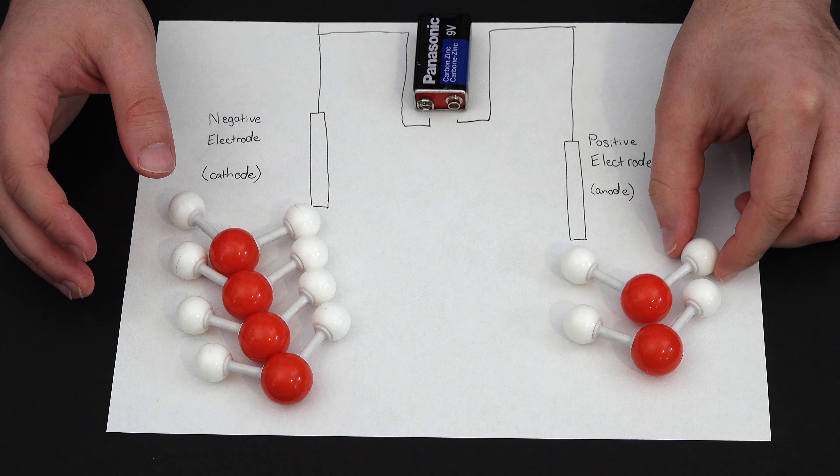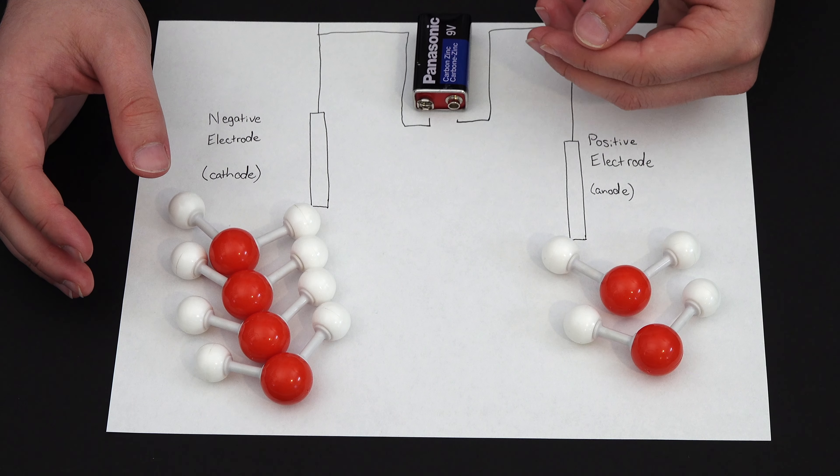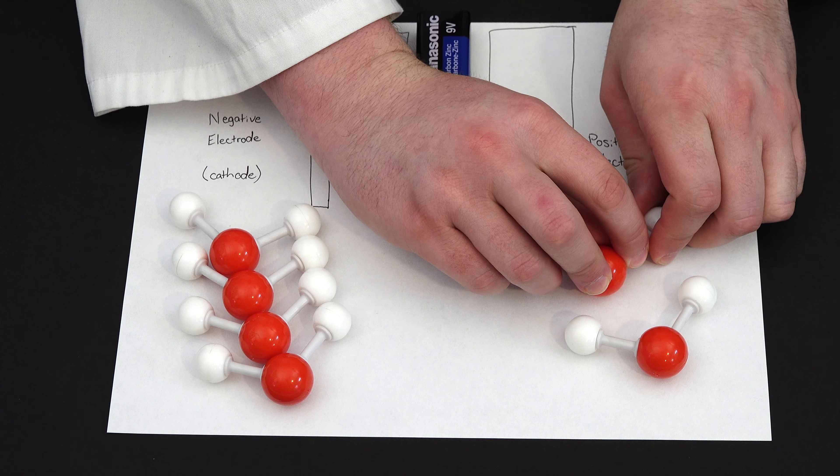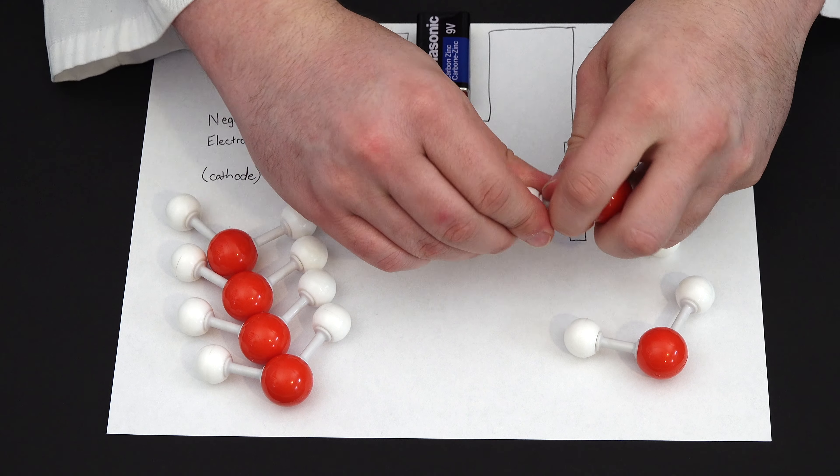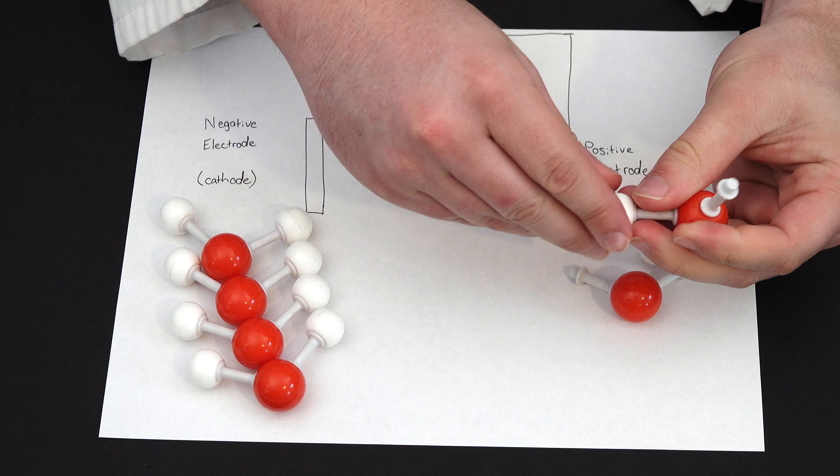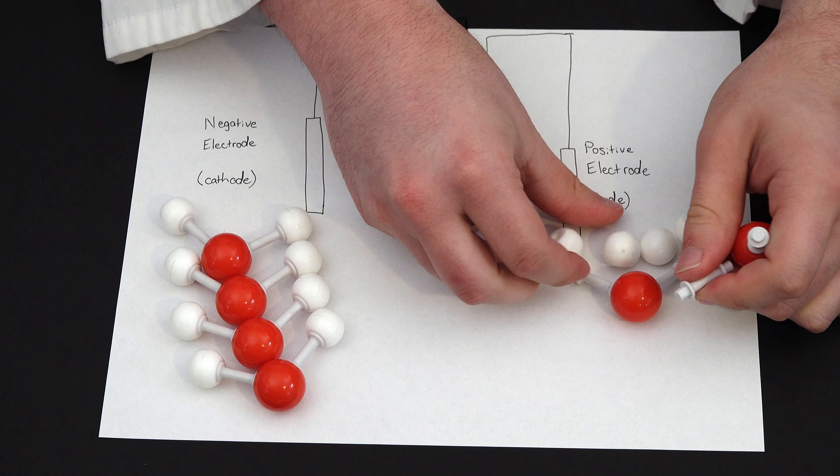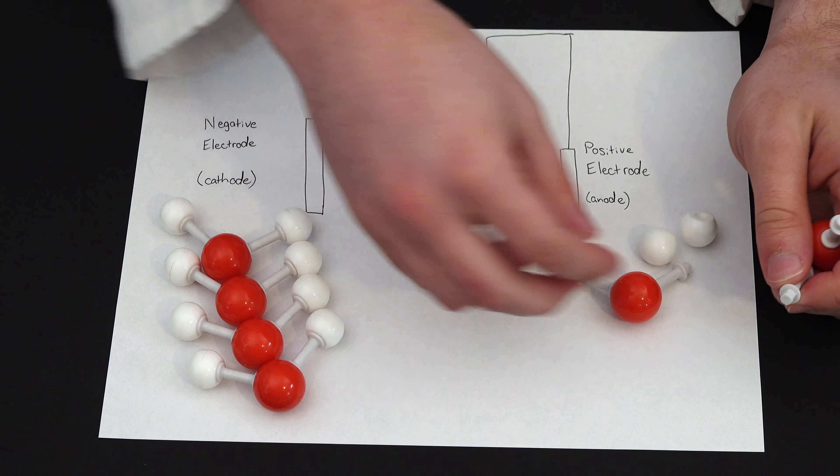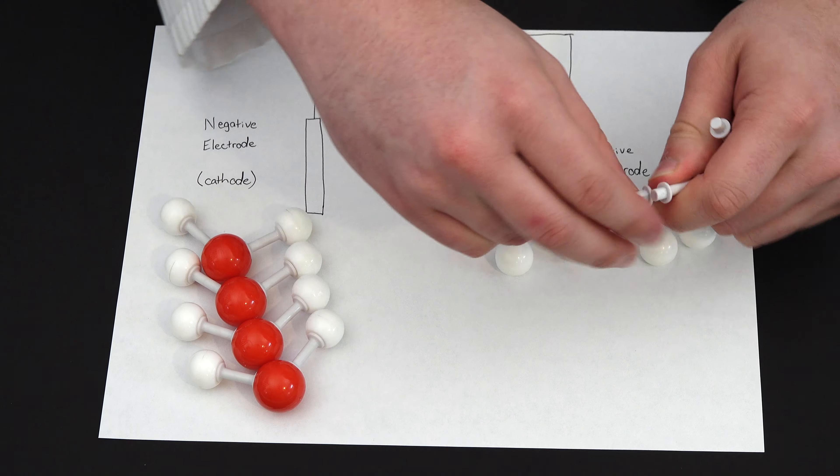So our process begins here on the positive end. Basically what we have is there are electrons being removed from this side, so what happens is we have two water molecules have their hydrogens stripped off, and four electrons get removed.